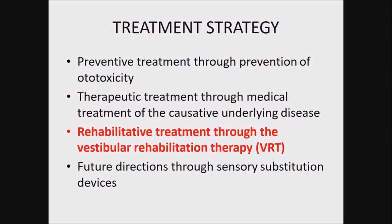We will concentrate mainly on rehabilitative treatment. In the initial stages, especially in patients where vestibular failure occurred due to ototoxicity, we can prevent further damage. In patients with autoimmune disorders, we can give immunosuppressants — maybe not forever, but at least we can postpone the event of complete bilateral vestibular failure. Rehabilitation therapy is extremely important in these patients, and future sensory substitution devices will also play a role.